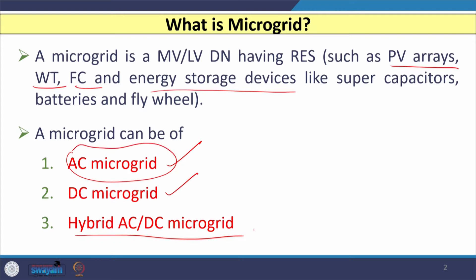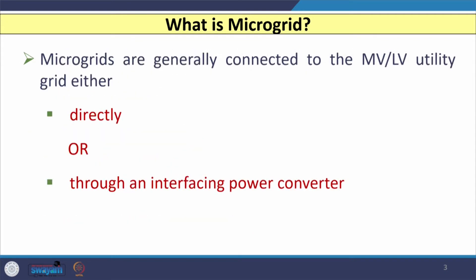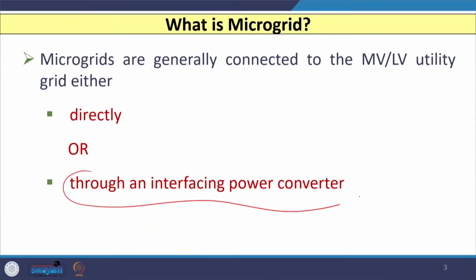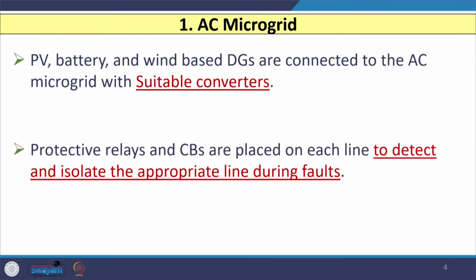In an AC microgrid, photovoltaic, battery, and wind-based distributed energy resources are connected with suitable converters. Protective relays and circuit breakers are also connected in each line so that whenever a fault occurs, we can detect the fault, isolate that line or section for maintenance work, and restore the power supply as early as possible.